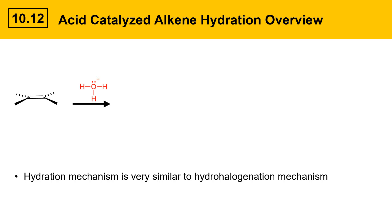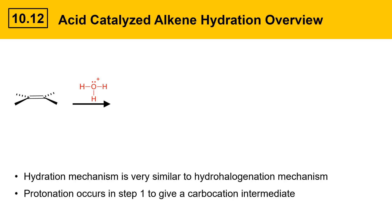The process starts with an alkene and aqueous acid. Here I'm showing a generalized alkene with no specific substituents on the double bond — we'll discuss that in a subsequent slide. In the first step, protonation occurs to give a carbocation: the alkene electrons in the pi bond grab a proton off the H3O+ to provide a new carbocation.